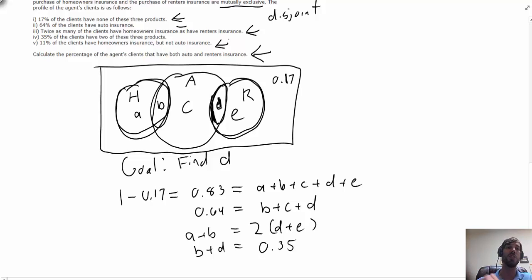Now finally we're at our last condition, which is that 11 percent of clients have homeowners but not auto. We don't want to look at the intersection; we want to look at this outer part here, so that tells me that A is 0.11.